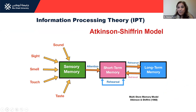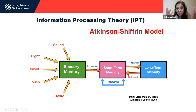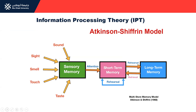Now we're going to move on to something called the information processing theory. There are several theories about how memory works. The Atkinson and Shiffrin model explains how memory works, and they have divided memory into three parts: sensory memory, short-term memory, and long-term memory. One memory leads to another.